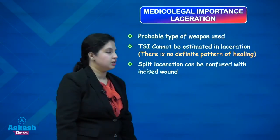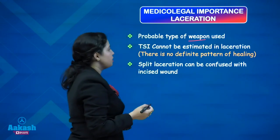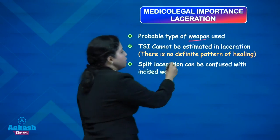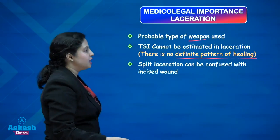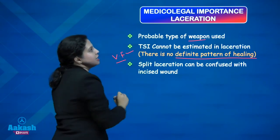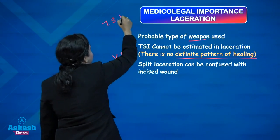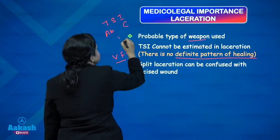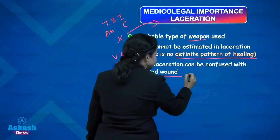Regarding the medico-legal importance of laceration: the probable type of weapon used can be discussed. However, the time since injury cannot be estimated in laceration, as there is no definite pattern of healing — it depends on the site, the age, and the immunity of the person. So the time since injury that we could discuss in abrasion and contusion is missing in laceration. Also, split laceration can be confused with incised wound — this cannot be stressed enough.